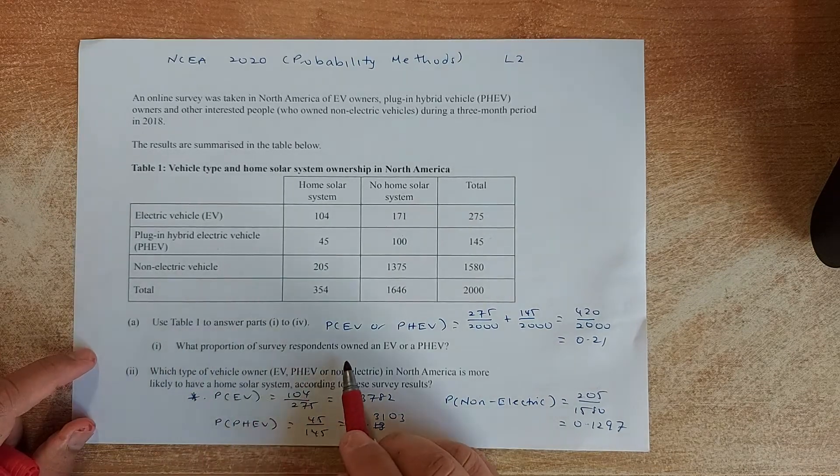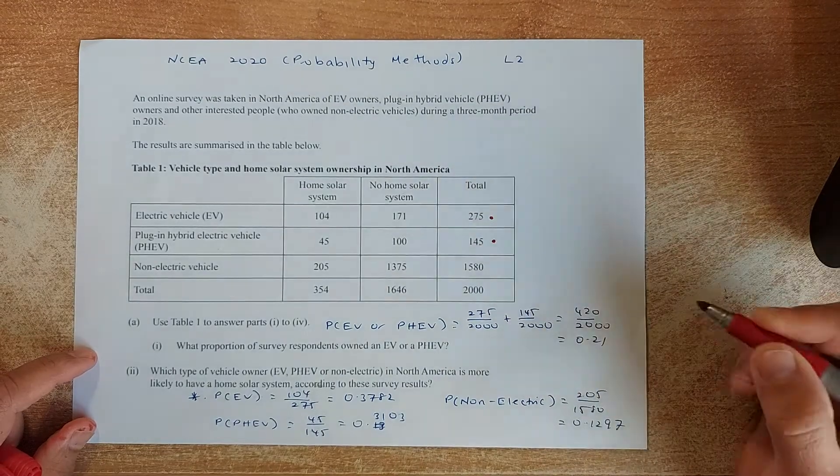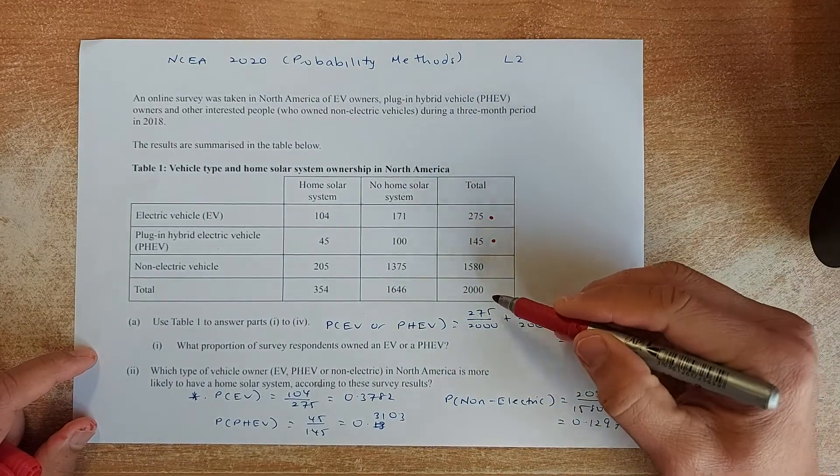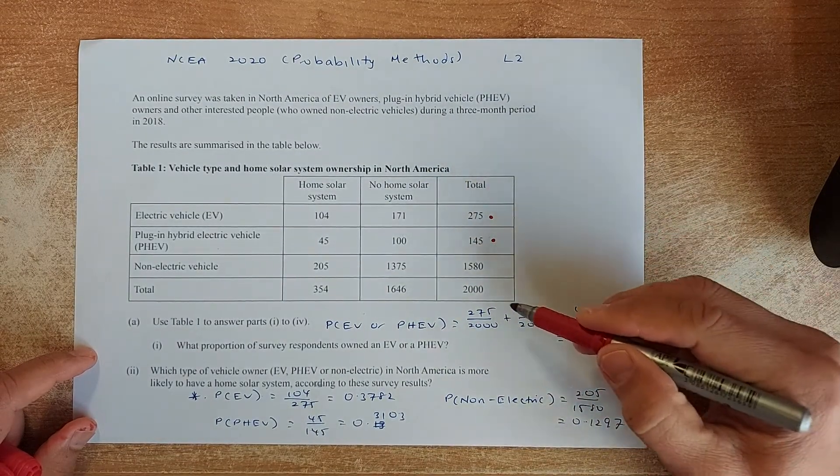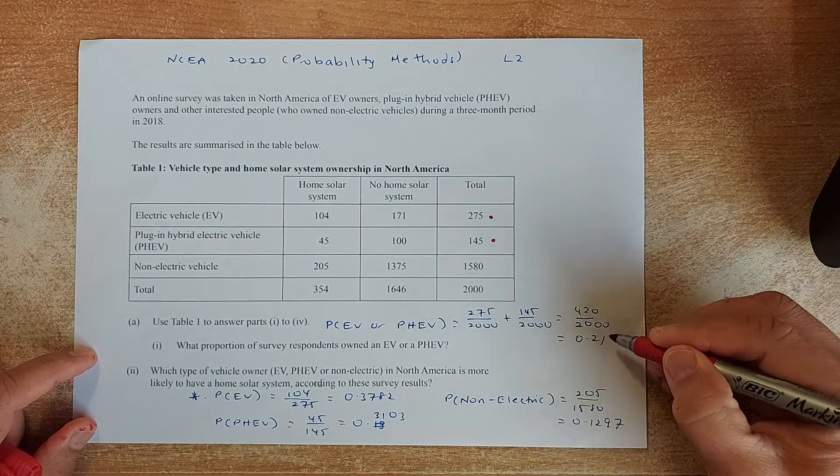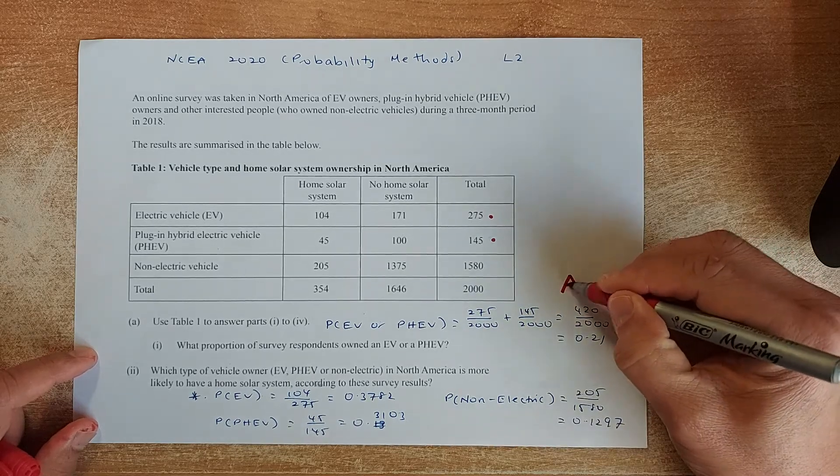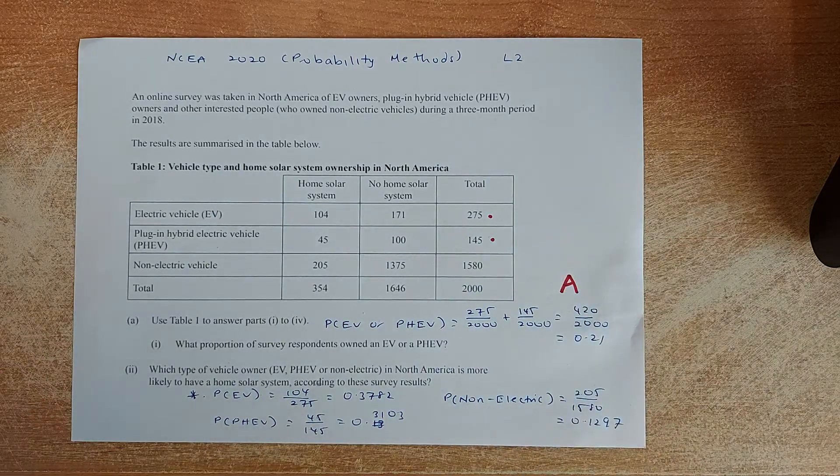What proportion of survey respondents own an EV or PHV? So that number and that number, you are going to add them up to 275 over 2,000 plus 145 over 2,000 and add them up. And the answer is 420 over 2,000 or simplified in decimal form is 0.21. And that is an easy achieve in level 2.